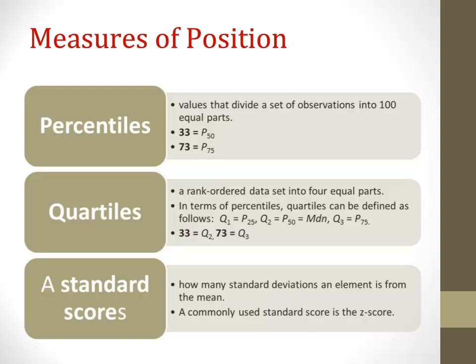In terms of percentiles: quartile 1 is equal to the 25th percentile; quartile 2 is equal to the 50th percentile, or the median; and quartile 3 is equal to the 75th percentile. So if we know that 33 equals the 50th percentile and the median equals the second quartile, then the score of 33 is equal to quartile 2, or the second quartile.